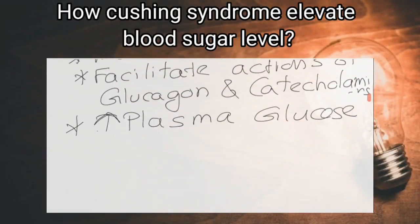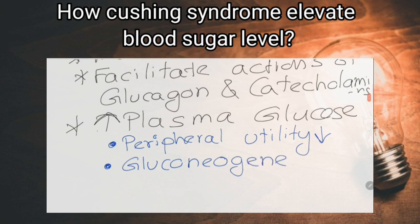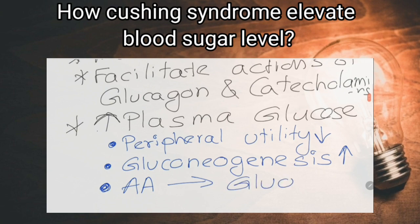How does Cushing syndrome cause elevated blood sugar levels? Increased glucocorticoids decrease the peripheral utilization of glucose. They catabolize proteins and amino acids are converted to glucose, so they increase plasma glucose levels, precipitating insulin-resistant diabetes.